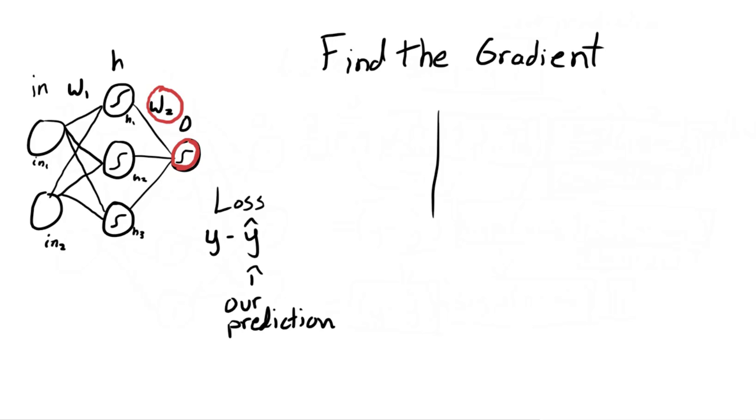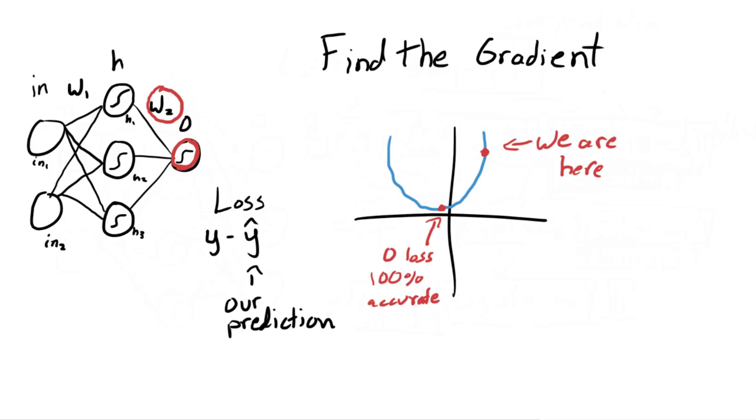And what we want to do is we want to find the gradient of this. And what do I mean by gradient? So our loss is probably going to be quadratic because we're squaring it. So if we look at this graph right here, you can see if this is like a graph of our loss, we want to be at that bottom right there, the zero loss or 100% accurate. Although we are currently at the 'we are here' mark, which is quite a bit of loss.